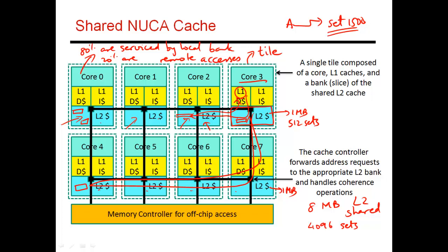With this approach, the behavior is very much as if I had a private L2 bank, because most of the time I'm getting data from my local cache — say a 5 or 10-cycle access penalty — and only occasionally do I go to other banks, incurring higher latency. This tries to combine the best of both worlds: the low latency of a private L2 cache, but also the hit rates of a shared L2 cache. If a core is accessing a lot of data, it can place pages in neighboring or distant banks, so the entire working set is accommodated by the aggregate L2 cache space.